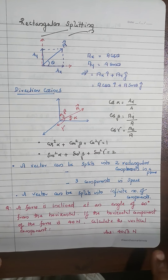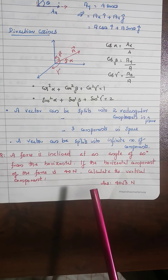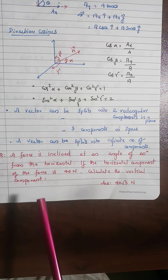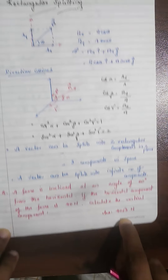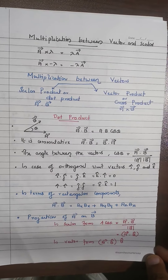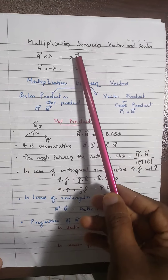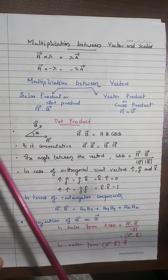Sample question: a force inclined at 60 degrees from the horizontal has a horizontal component of 40 N. Calculate the vertical component. Use the rectangular splitting concept to solve it easily. Also keep in mind: multiplying a vector by a positive scalar gives the same direction with that magnitude; multiplying by a negative scalar reverses the direction.